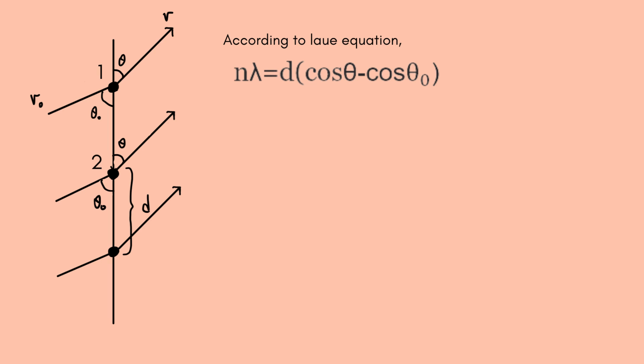The question is, under what conditions does constructive interference occur? To know this, we have to calculate the path length differences by using trigonometry.